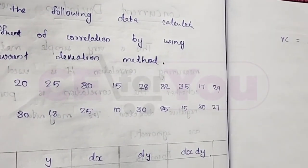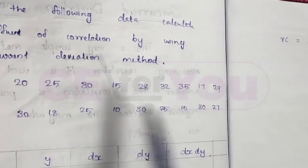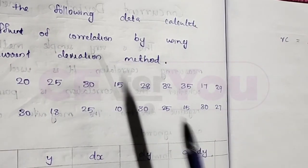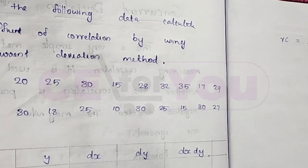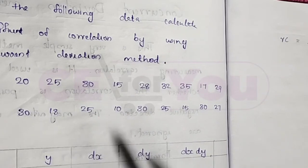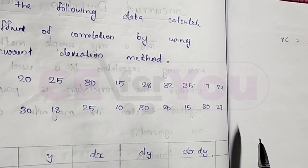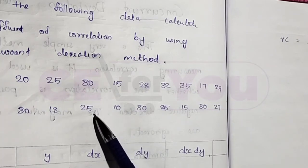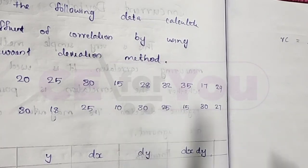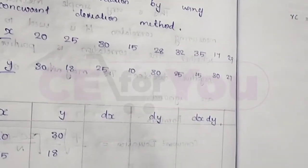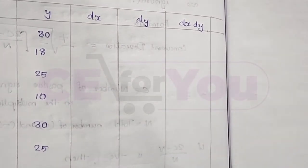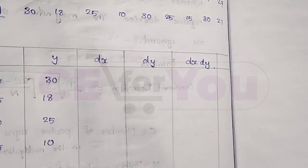From the following data, calculate the coefficient of correlation using the Concurrent Deviation Method. We are given data for variables x and y.